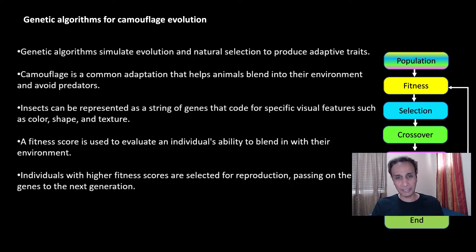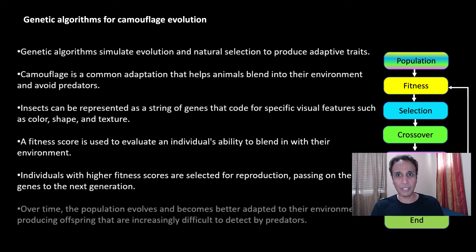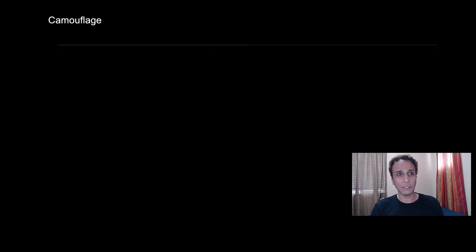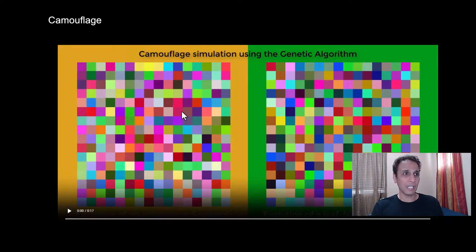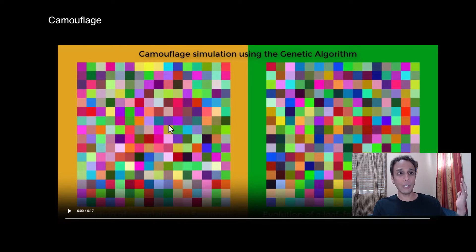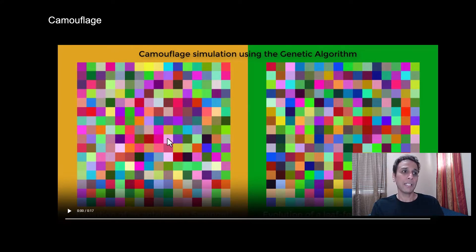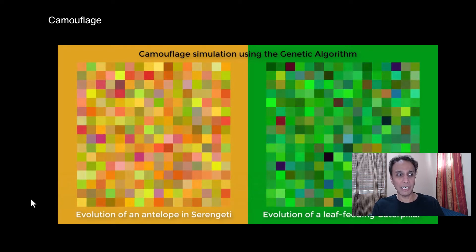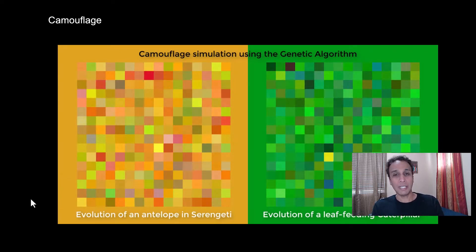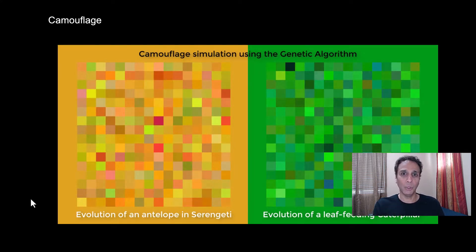Higher fitness scores are selected for reproduction, passing genes to the next generation, and over time the population evolves and becomes better adapted to the environment. On the left-hand side you can see an animal in Africa with a yellowish background; on the right-hand side a small bug sitting on a leaf that wants to be green for best survival. Initially the population is random with all types of colors, but you see more and more individuals blending into the background color — this is nature, this is evolution.